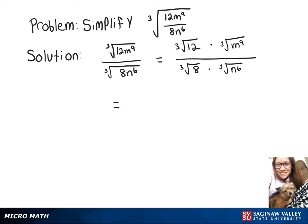Now on top, since the cube root of 12 can't be simplified any further, we'll start with the cube root of m to the 9th, and we're just going to divide that 9 by 3, giving us m to the 3rd, and then of course we've still got our cube root of 12 there.